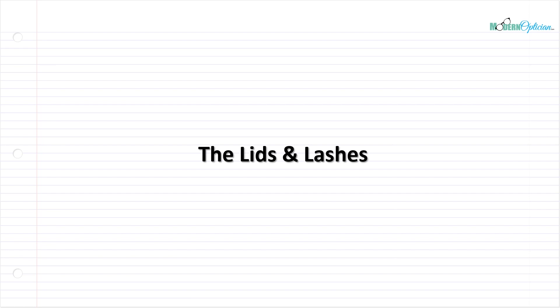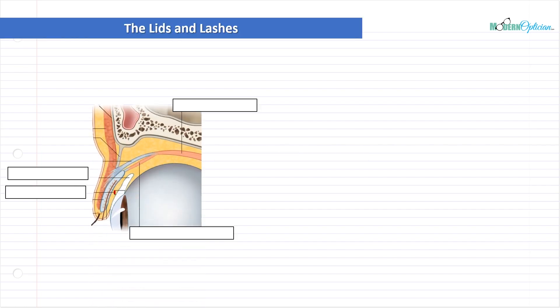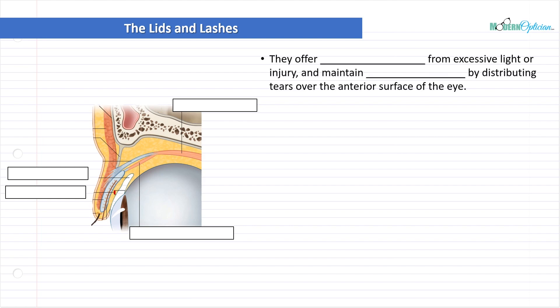So let's jump into it and look at what we need to know. Here is a diagram of the side of the eye with the upper lid going right over it. We're going to start labeling this diagram and talking about some of the more important parts. The lids offer protection from excessive light or injury — if things are bright you can squint or close them, and if things are flying at your face they will involuntarily close.